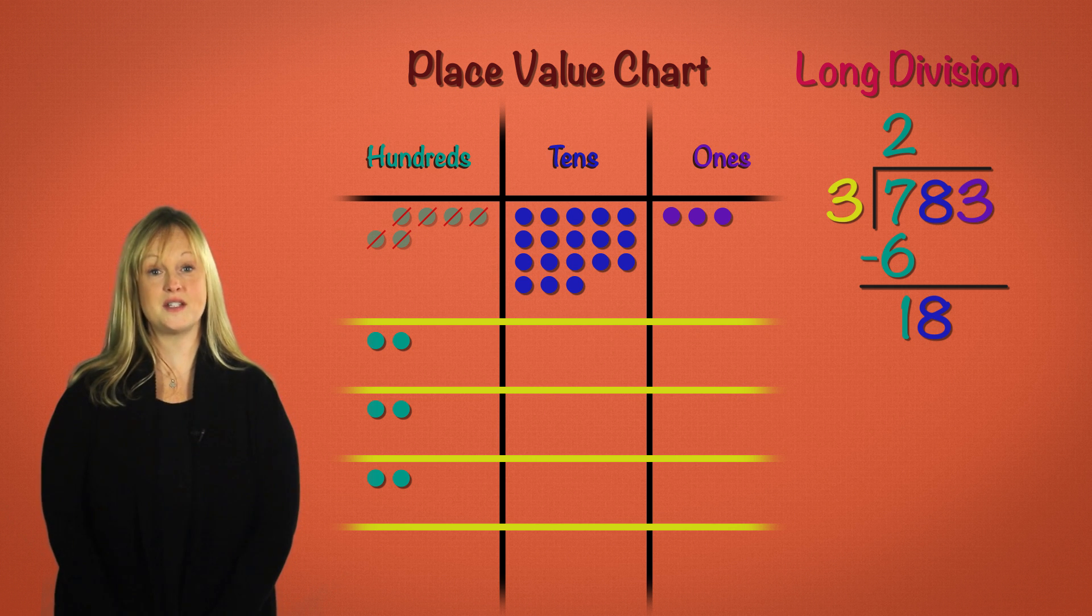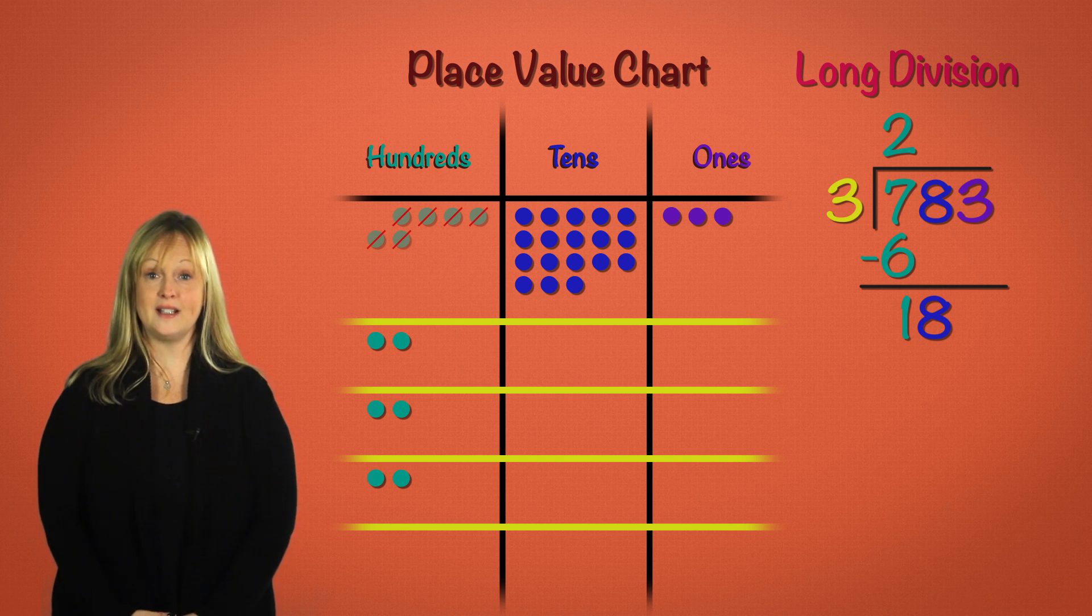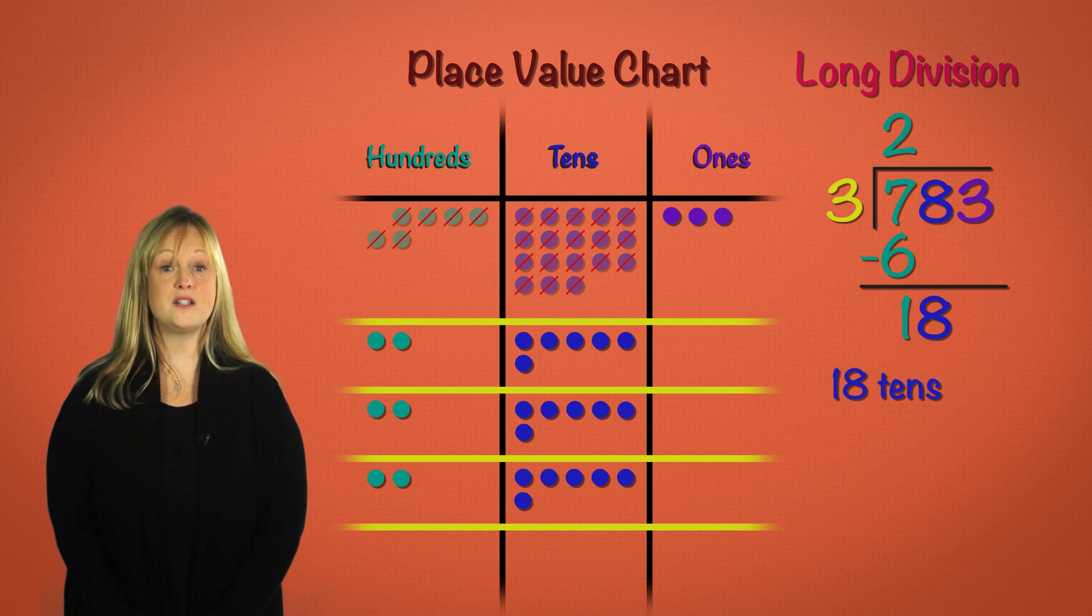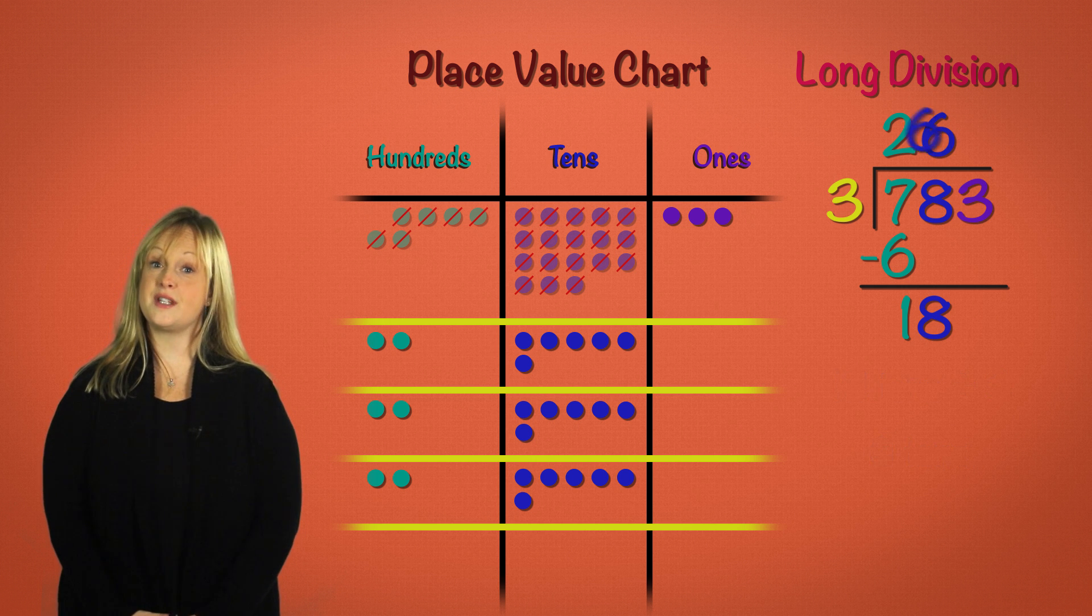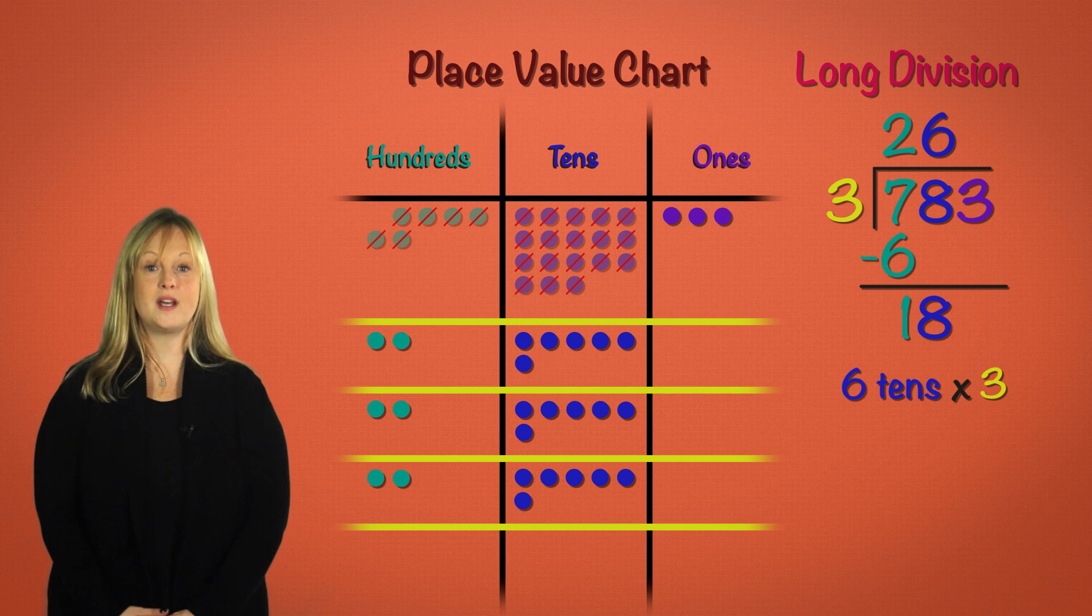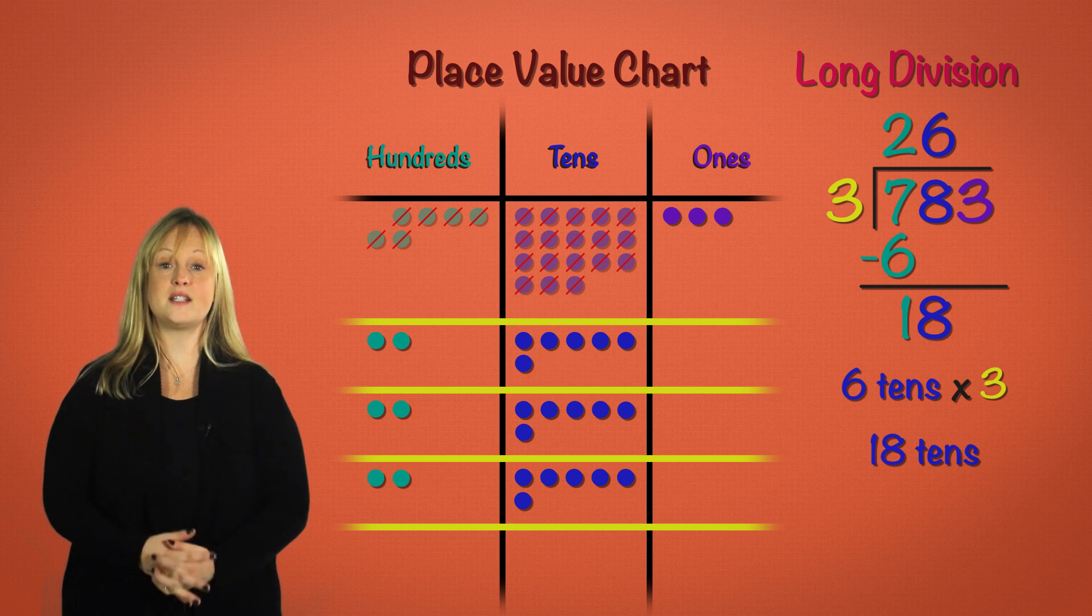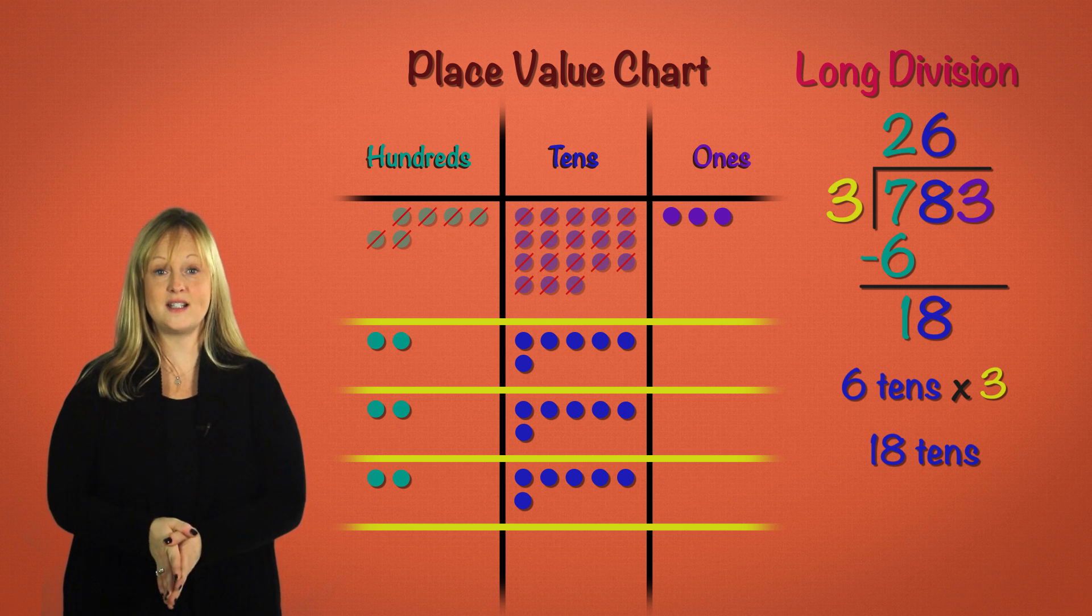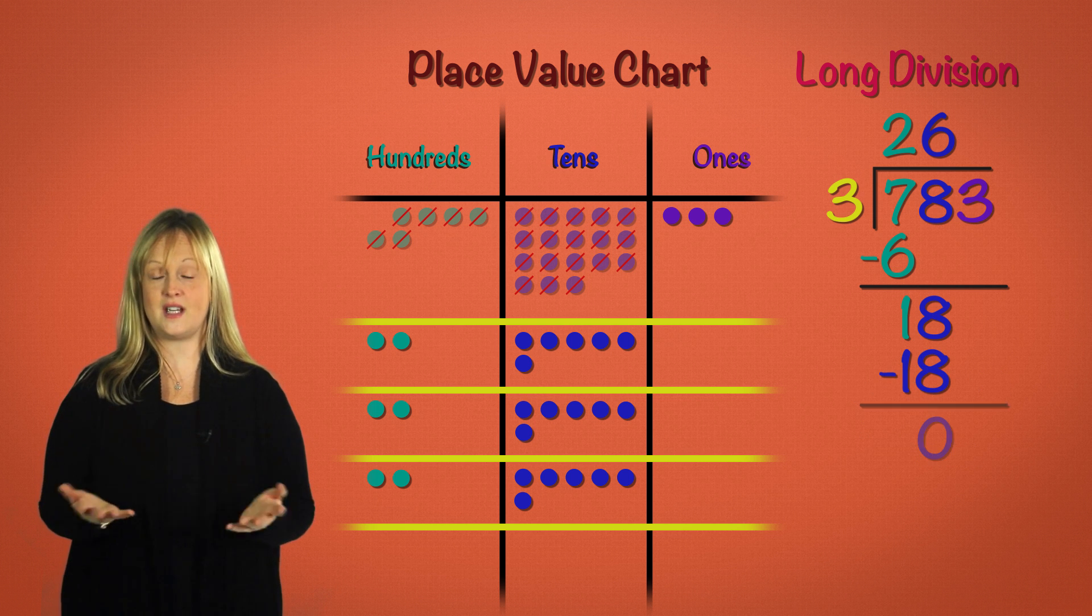Which sentence tells us how we should distribute these eighteen tens? We want to divide these eighteen tens by three. And that gives us six tens in each column. Eighteen tens divided by three equals six tens. So six tens times three equals eighteen tens. We distributed all eighteen discs evenly and have none remaining. And here in our long division sentence, we have eighteen tens minus eighteen tens equals zero.